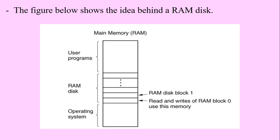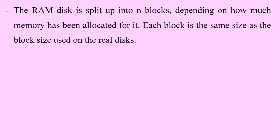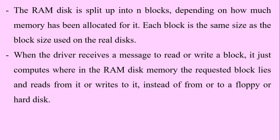The RAM disk is split up into a number of blocks depending on how much memory has been allocated for it. Each block is the same size as the block size used on the real disks. When the driver receives a message to read or write a block, it just computes where in the RAM disk memory the requested block lies and reads from it or writes to it, instead of from or to a floppy or hard disk.